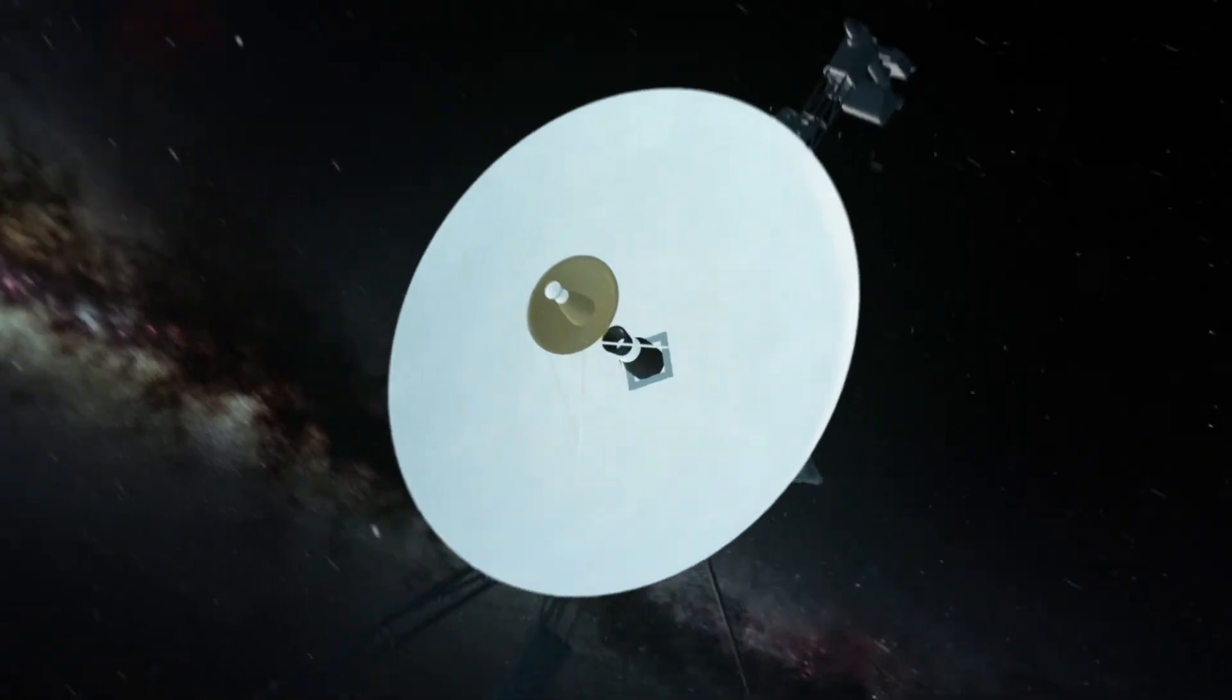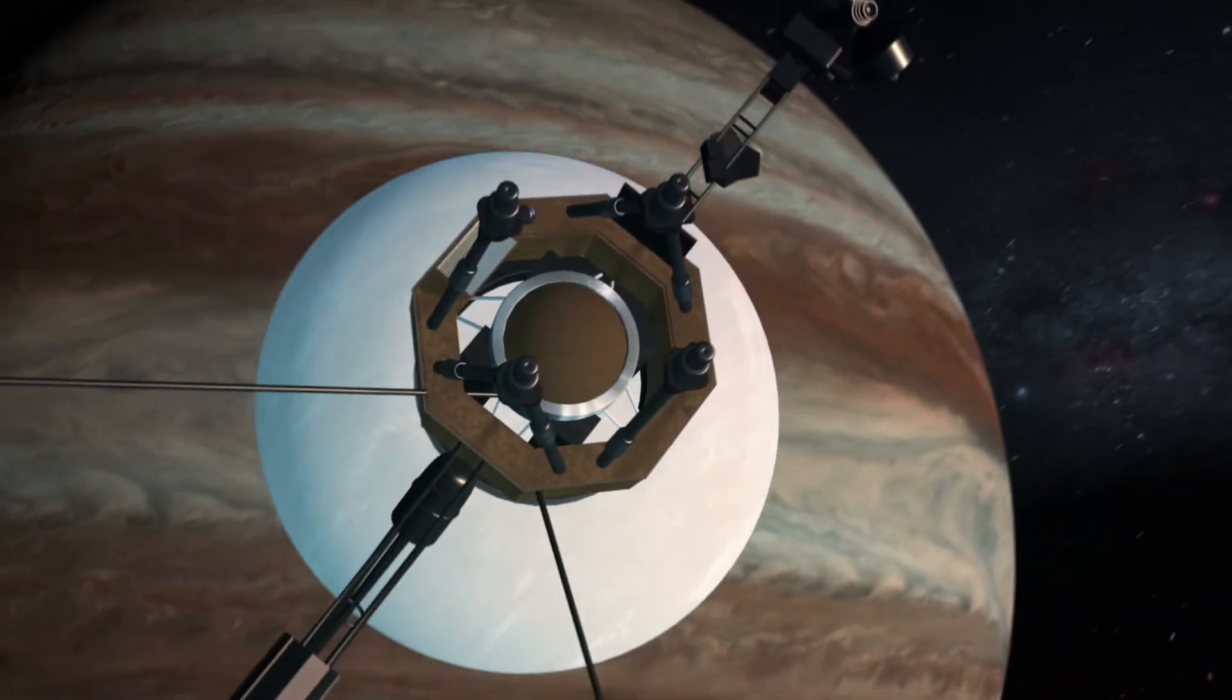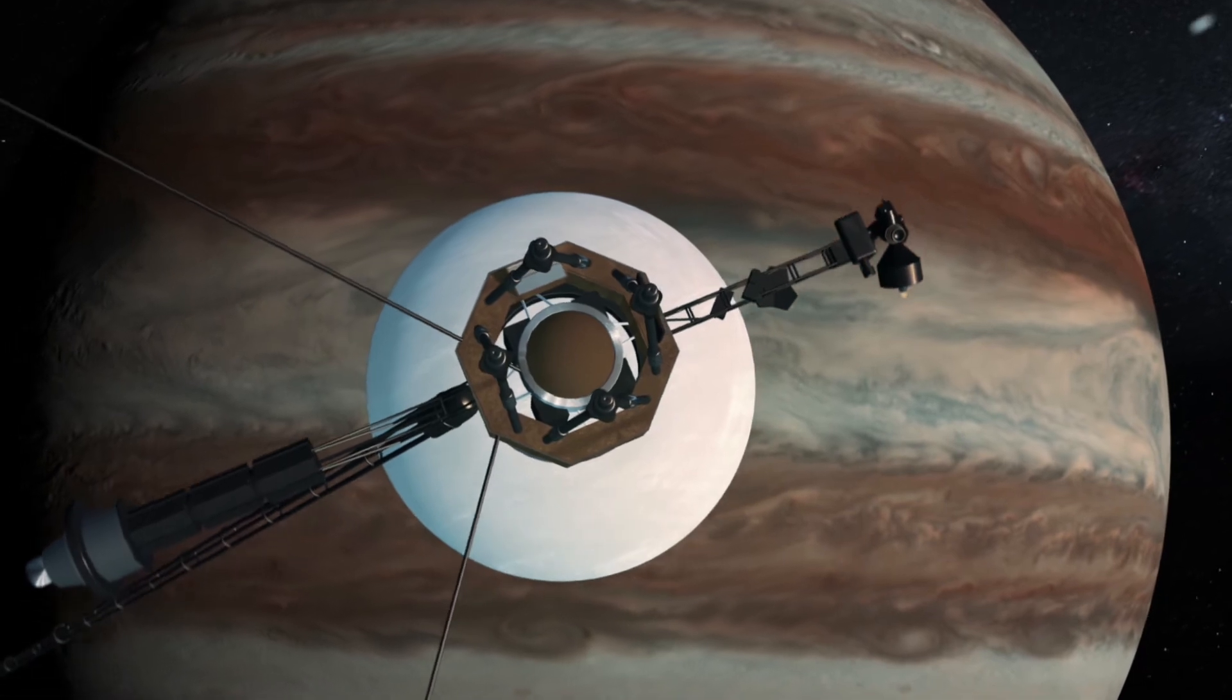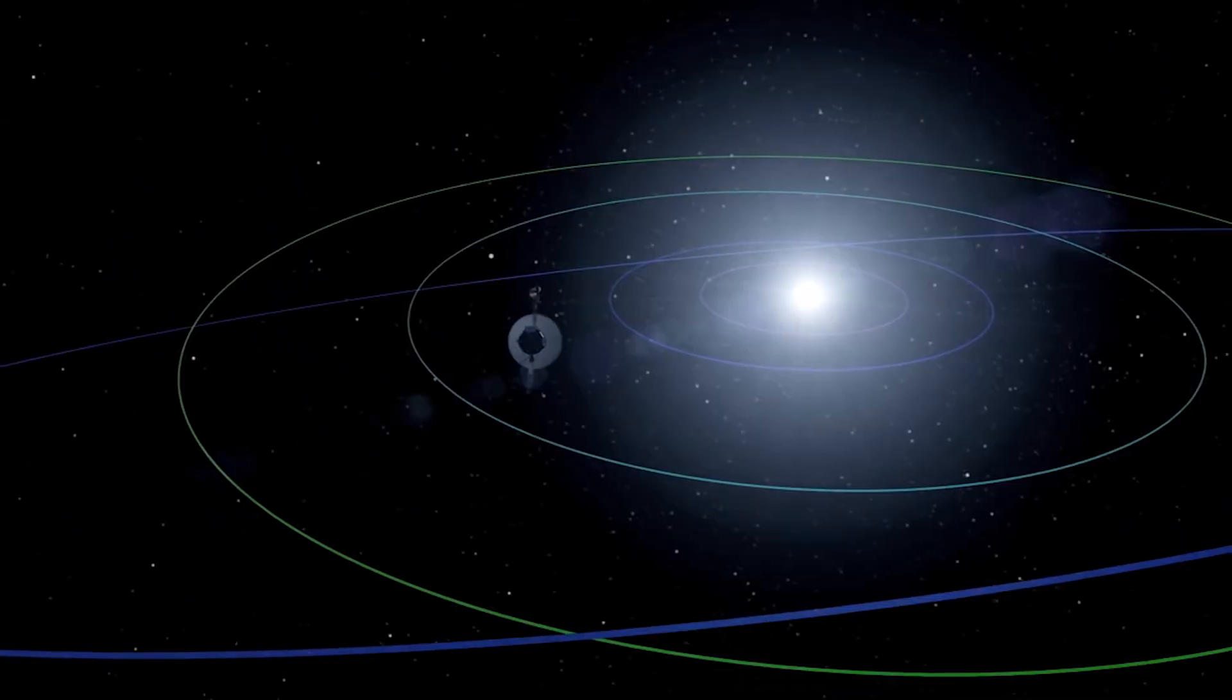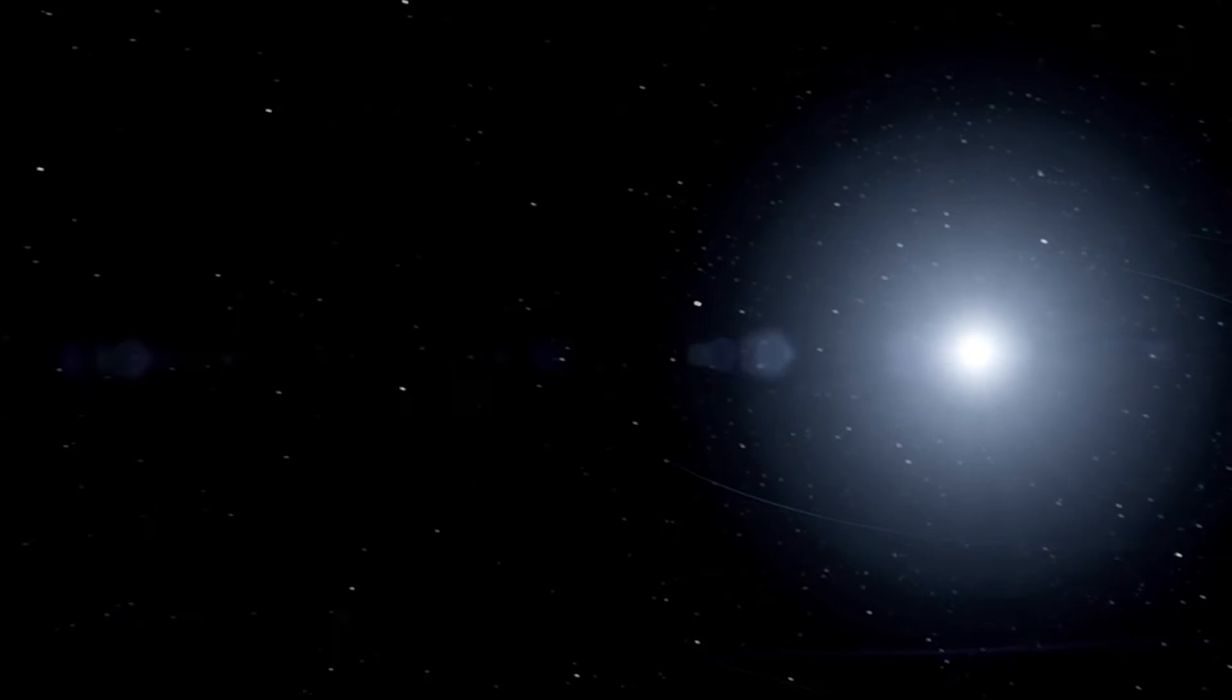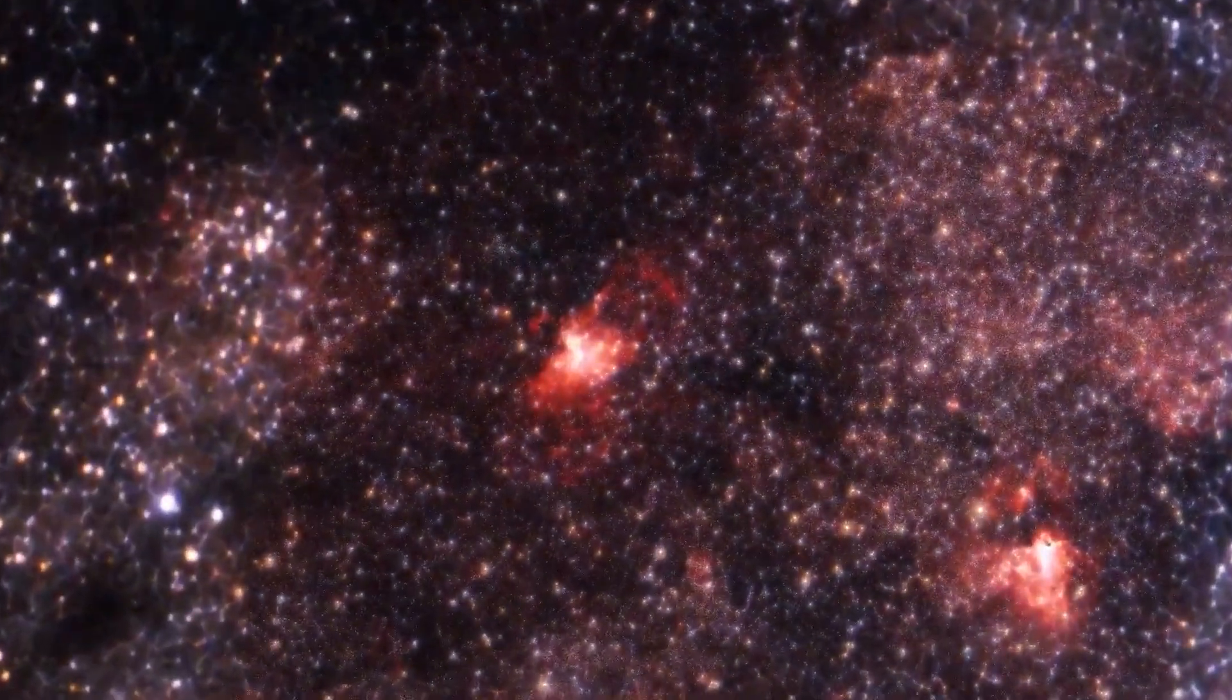Many robotic spacecraft have flown by our planetary neighbours, but no human has yet set foot on another planet. The Voyager spacecraft are the most distant objects we have sent into the solar system. It's one tiny way we are trying to understand the amazing region we live in.